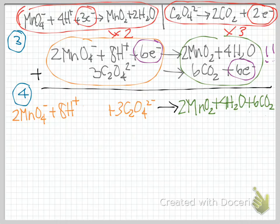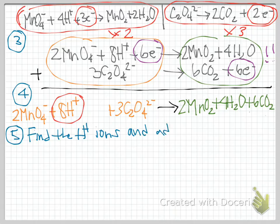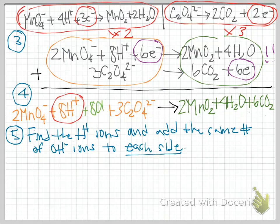It's not, it's in a basic solution, so we are not done. We have another step. Step five is to find the H pluses, the H⁺ ions, and add, I circled them there, and add the same number of OH⁻ minuses to each side of the reaction. We have to add it to each side. That's really important, it's something a lot of people forget, each side. So I'm going to add 8 OH⁻ minuses to each side of the reaction.